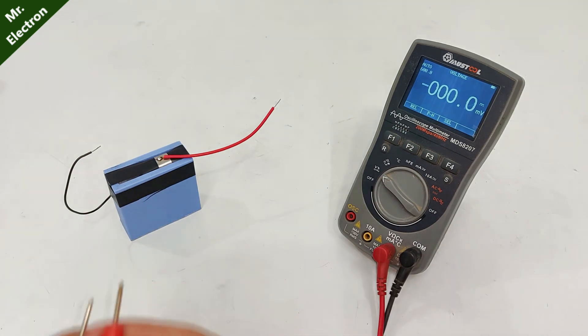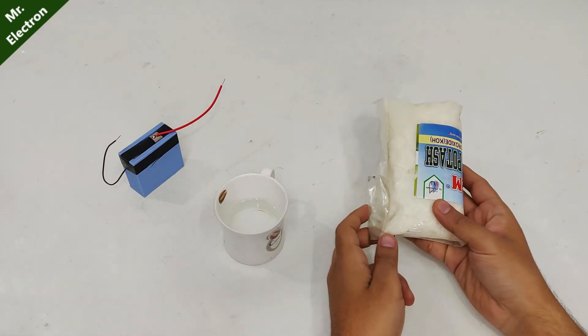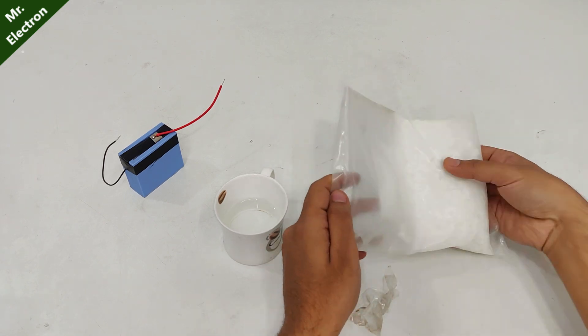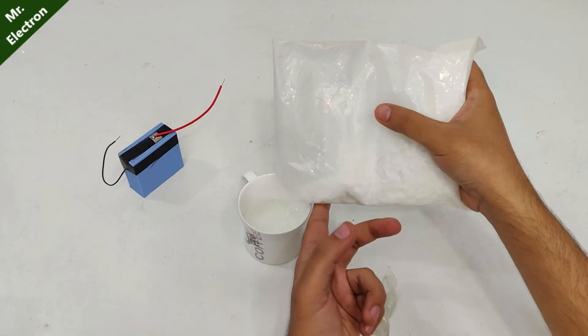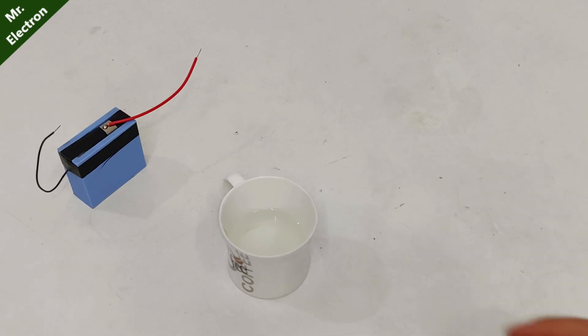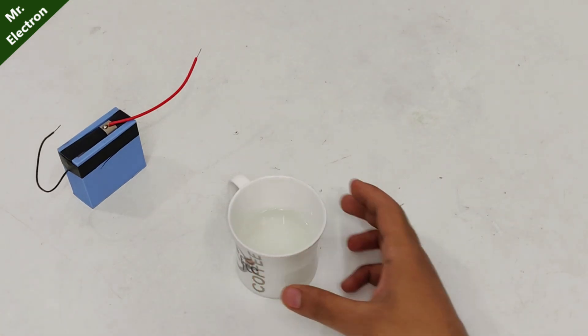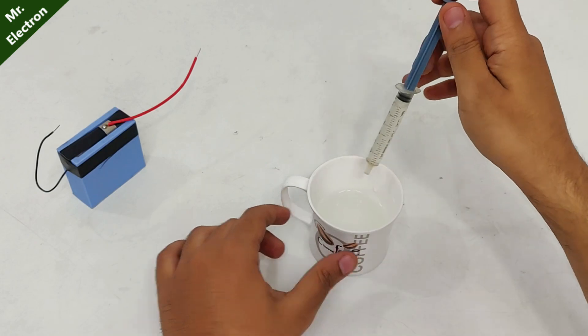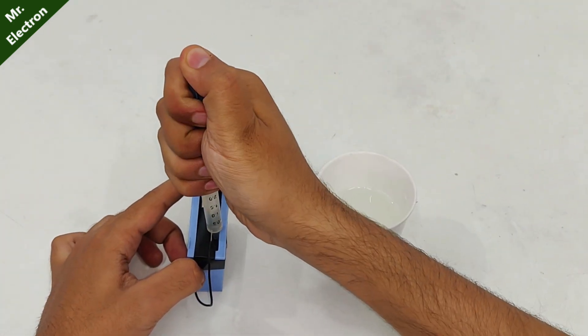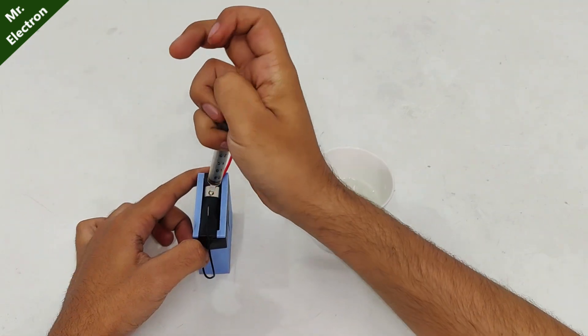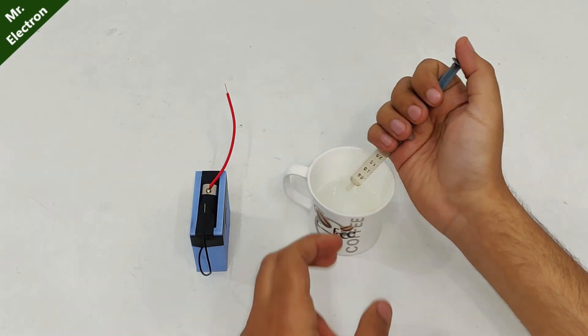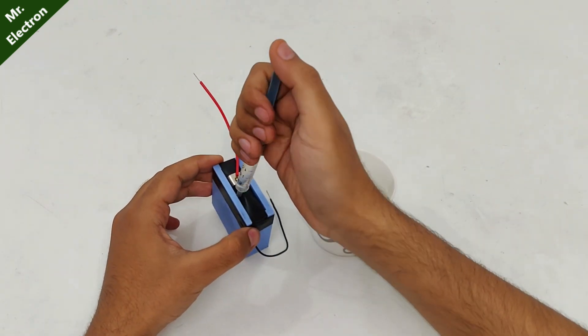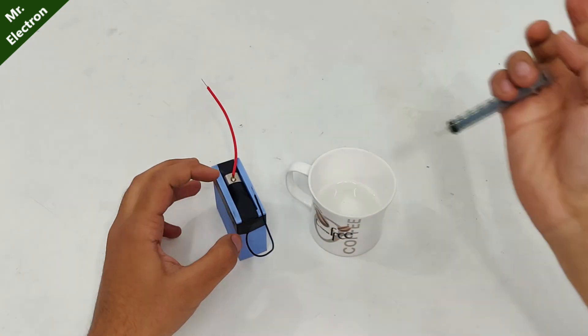So let's fill that. This is some distilled water and this is caustic potash, potassium hydroxide. Now let's fill it up. This should be enough to start the reaction, let's check the voltage.